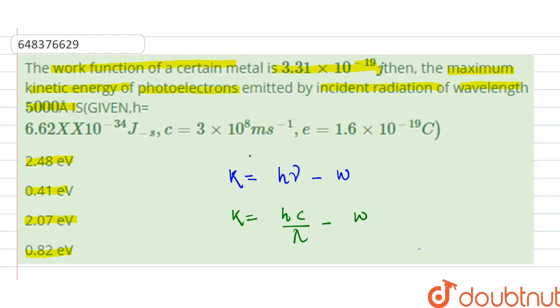equals 1240 eV·nm. The work function is given as W = 3.31 × 10^-19 joules, and we know that